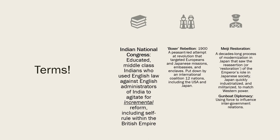The Boxer Rebellion was eventually put down by a coalition of 12 different nations, which included the United States and Japan — the United States a little late to the game, but more than eager to help put it down. Now let's move on to why Japan suddenly becomes a player in the divvying up and putting down of China.